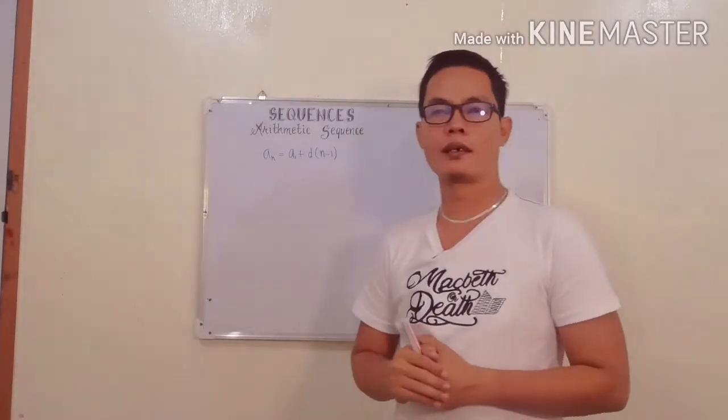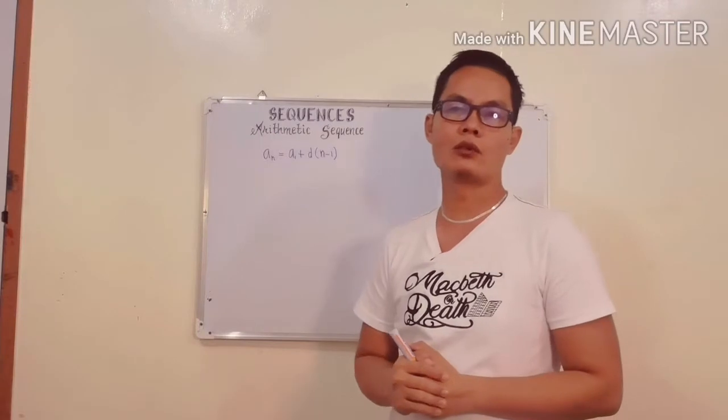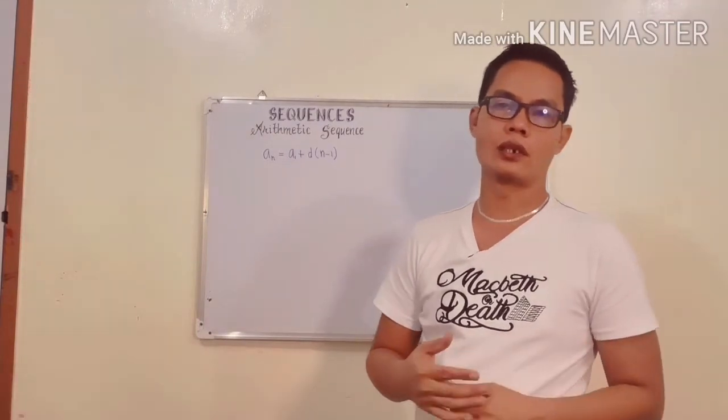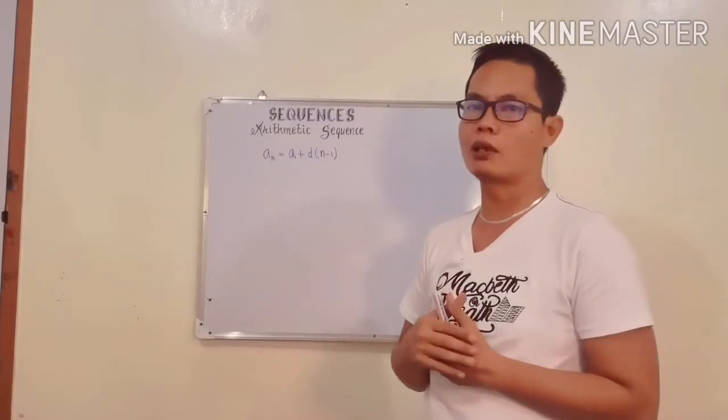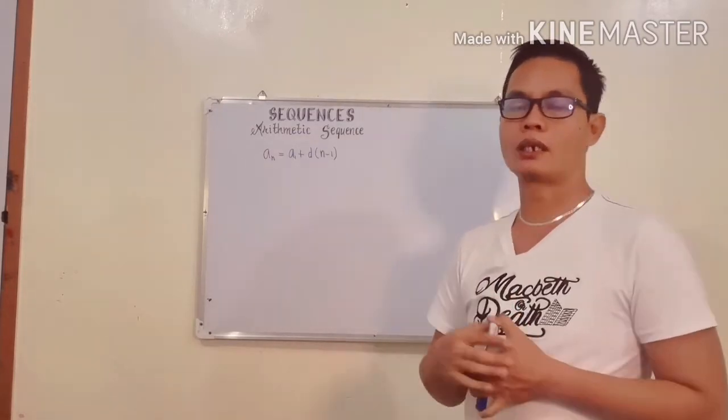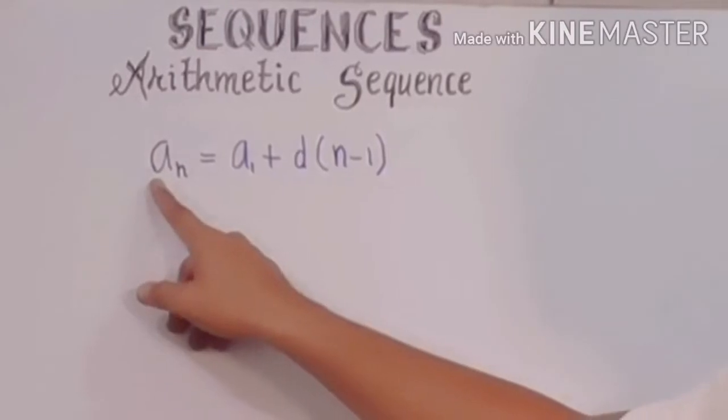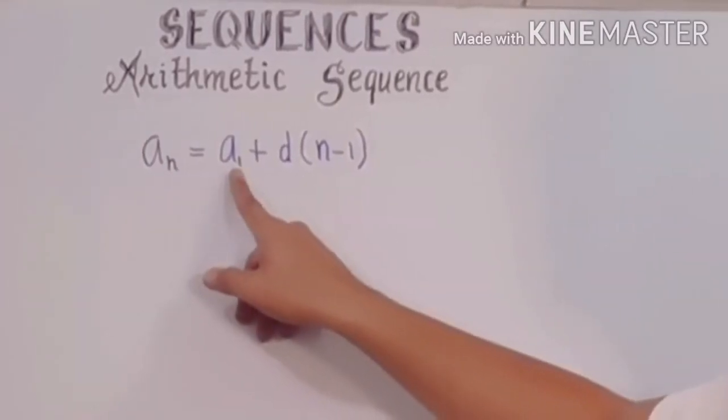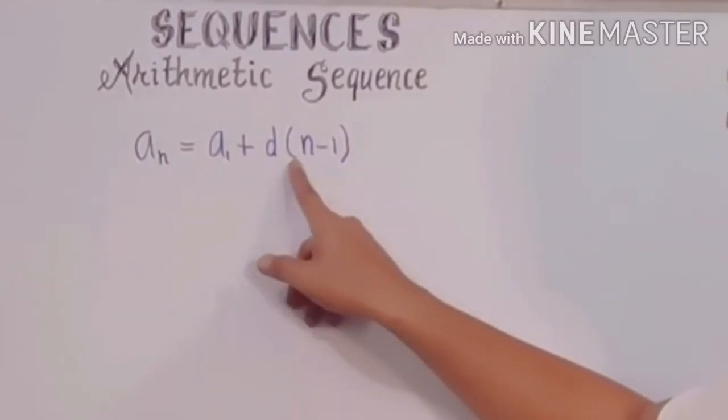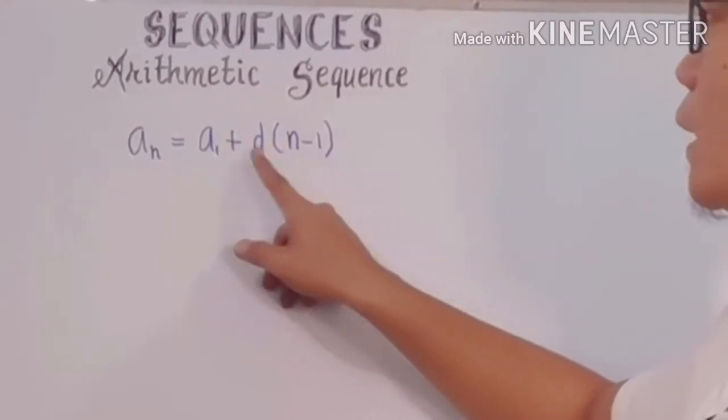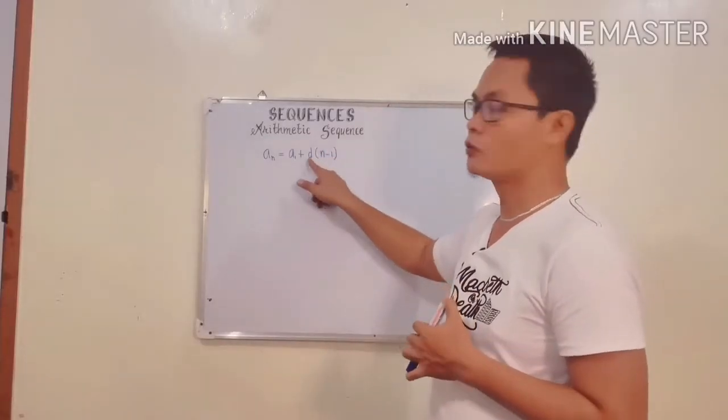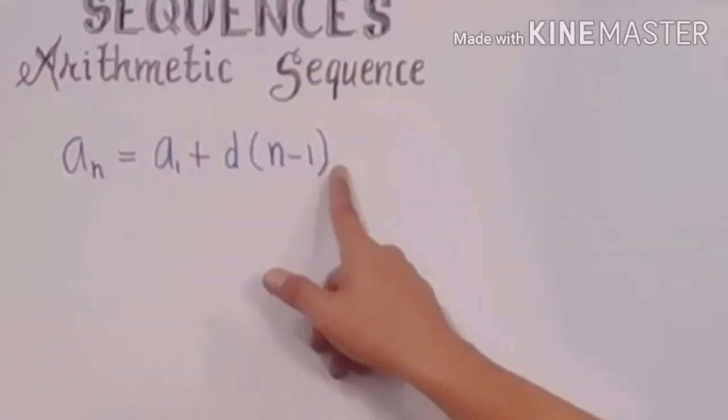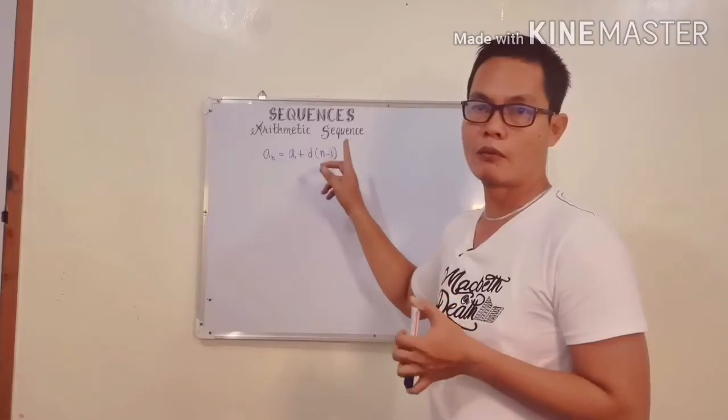We have a formula: aₙ = a₁ + d(n - 1). In this formula, usually ang ginagawa ko sa loob ng klase during my classroom activities, pinapakanta ko sila para hindi nila makalimutan yung formula, parang chanting - maybe aₙ = a₁ + (n - 1) times d. By the way, wag kayong malito kung halimbawa yung value ng d is here. It's the same when you multiply something - either way pwede mong balikta rin.